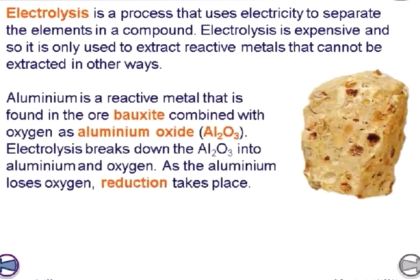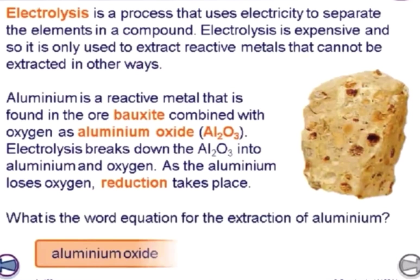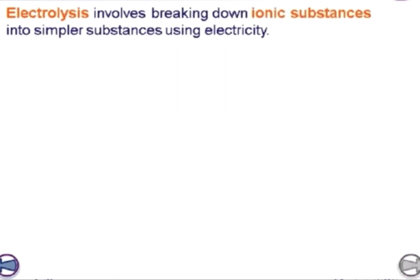When we look at aluminum, it is a very reactive metal that is found in the ore bauxite, combined with oxygen as aluminum oxide. Electrolysis breaks down the aluminum oxide into aluminum and oxygen. As the aluminum loses oxygen, reduction takes place and we get aluminum. Electrolysis involves breaking down ionic substances into simpler substances using electricity.